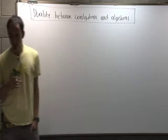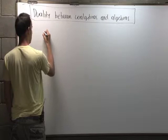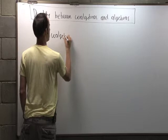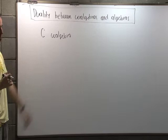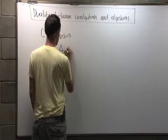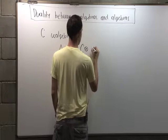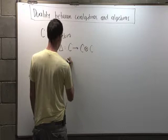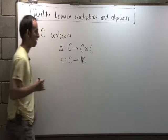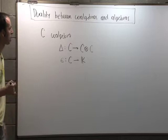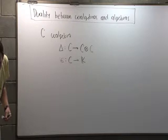So just to remind you: when I have a co-algebra, what that means is that C is going to be a vector space together with some linear maps. The first map is the co-product, and it goes from C to C tensor C. The co-unit goes from C to K, where K is our ground field, and C is a vector space over K. You need to satisfy certain axioms.